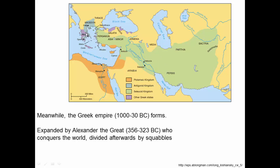Meanwhile, in Greece, the Greek Empire forms — about 3,000 years ago until about 2,000 years ago. This empire was greatly expanded by Alexander the Great, who in about 30 years of life managed to conquer much of the known world. But he didn't set up a good plan for who would run it afterwards, so when he died young there was infighting and his empire didn't last. These empires unify people politically and also unify ideas.